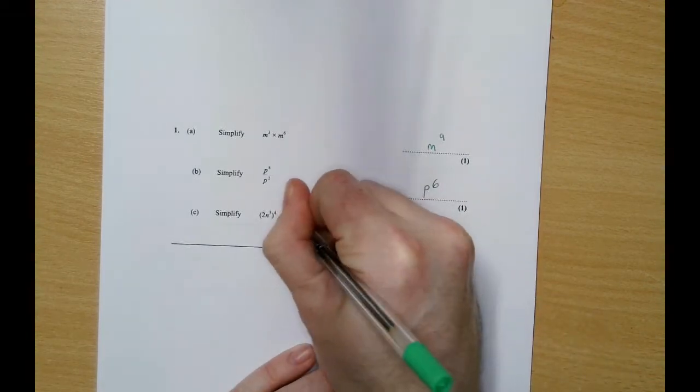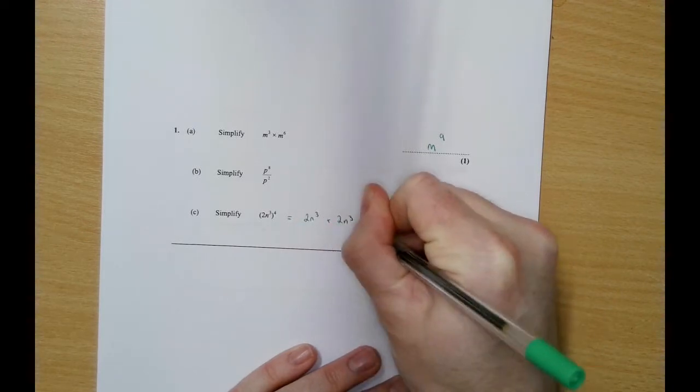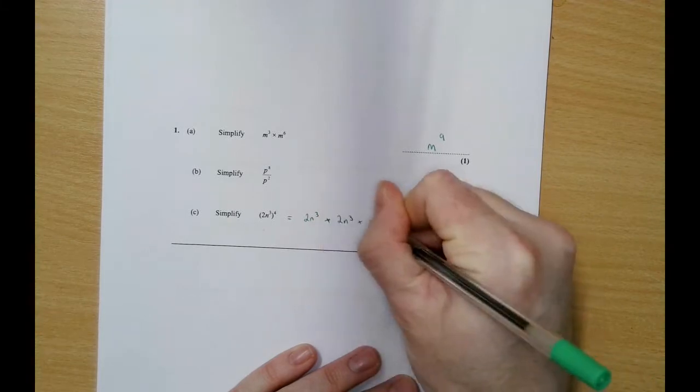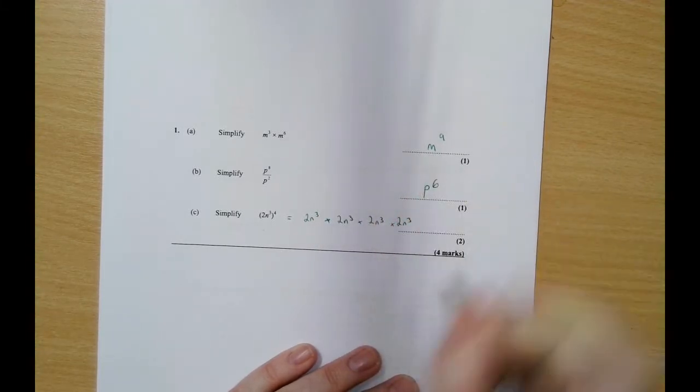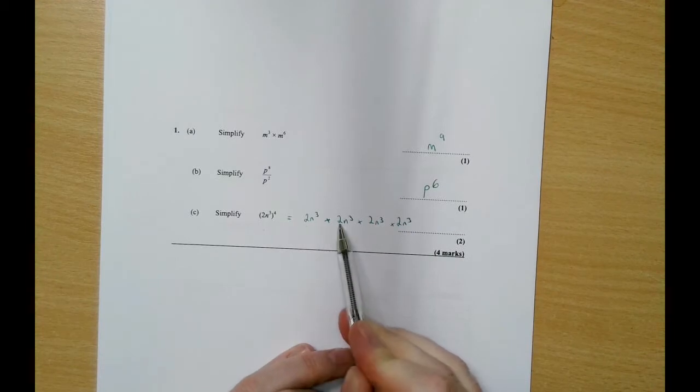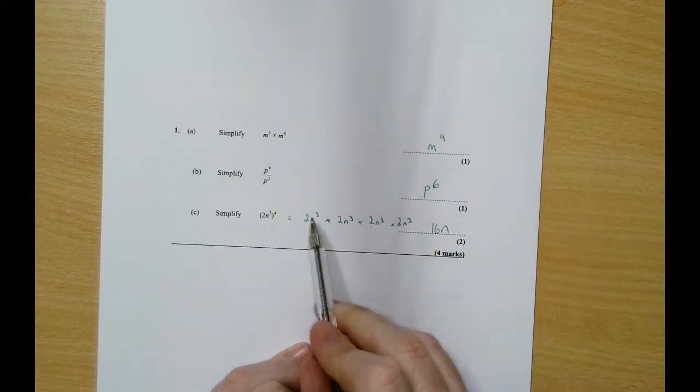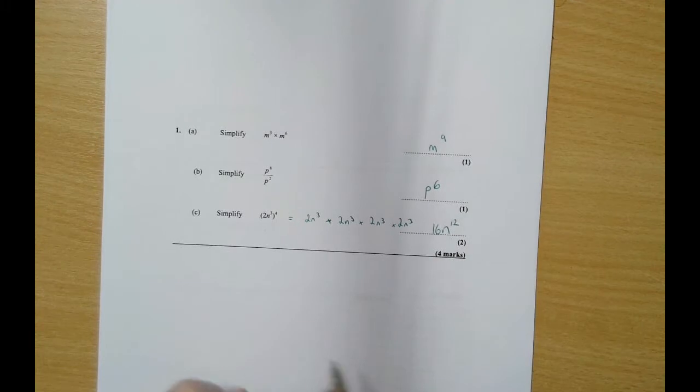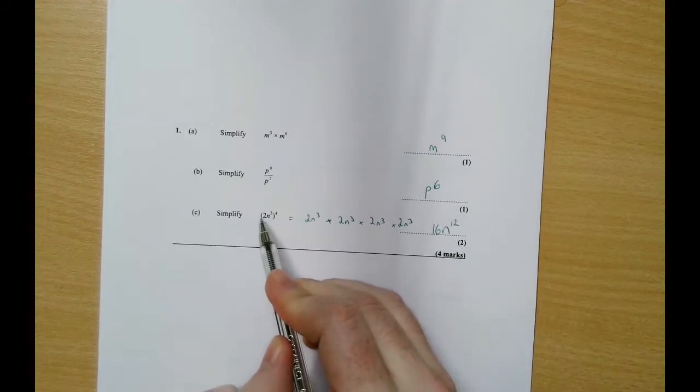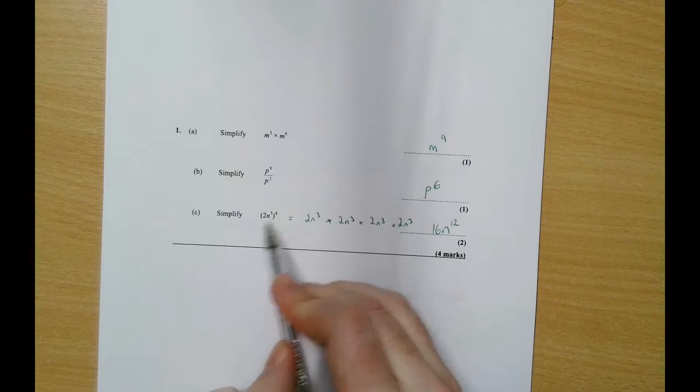To the power of 4 means multiplied by itself four times. There's a new rule within this - it's never a bad idea if it's a smallish number just to write it out. So we've got 2 times 2 is 4, times 2 is 8, times 2 is 16. So it'll be 16 n to the power of 3 add 3 add 3 add 3 which is 12. Looking at the bracket, we literally did 2 to the power of 4, so we did the proper numerical indices terms there, and then we just multiplied the 3 and the 4 to get that.